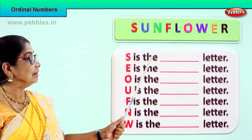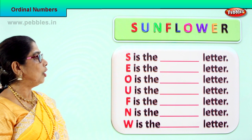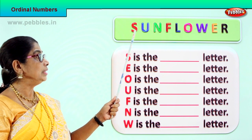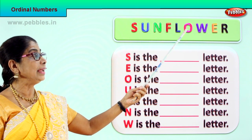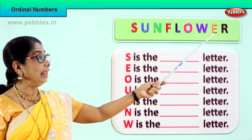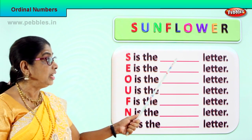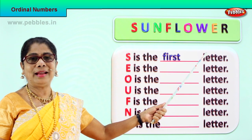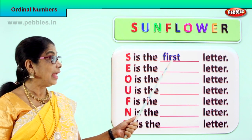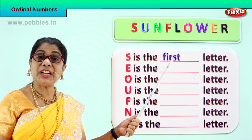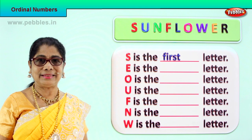S is the first letter. Let's say all the ordinal numbers first: first, second, third, fourth, fifth, sixth, seventh, eighth, ninth. There are nine letters here. Now letter S is the first letter of sunflower. Spelled first: F-I-R-S-T, first. What is the ordinal position of letter S? It is the first letter. Good.